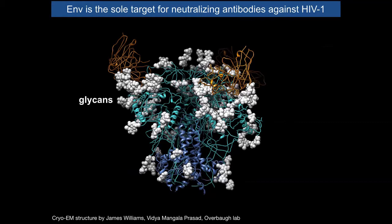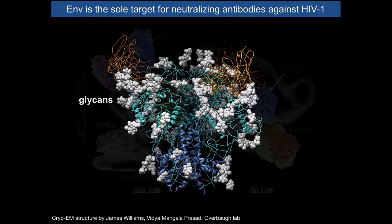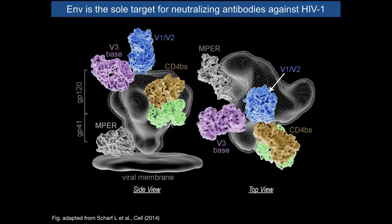Despite those challenges, there's been a renaissance in understanding how neutralizing antibodies can recognize this antigen. There are numerous different sites of vulnerability, including the CD4 binding site, the apex at the top of the trimer which maintains it in a closed prefusion conformation, the base of the V3 loop involved in co-receptor binding, and the membrane proximal external region, or MPER, nestled close to the viral membrane. Through cryo-EM and crystallography, we're starting to understand how antibodies recognize the glycoprotein trimer.